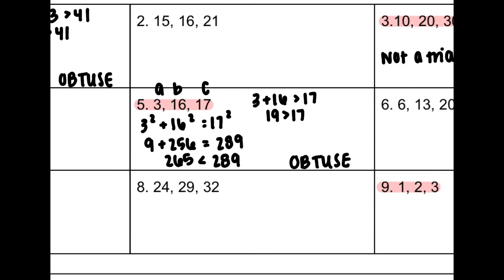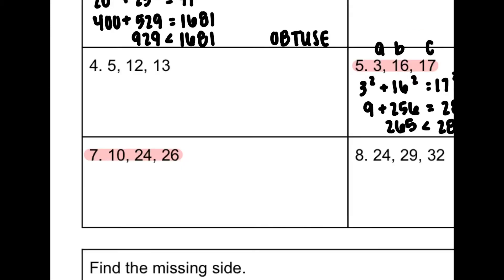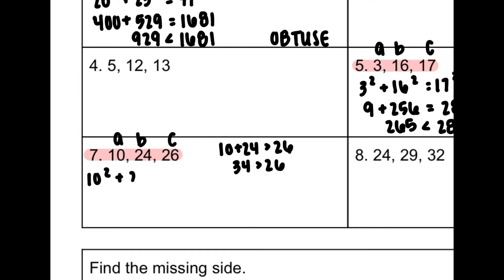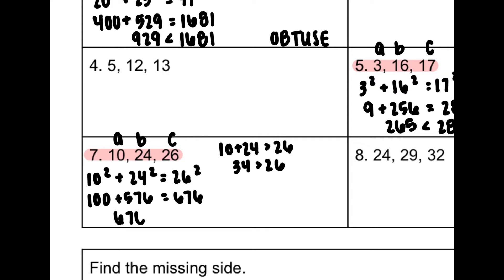If you don't remember how to do this, make sure you took the notes on the Converse of the Pythagorean Theorem. Now number seven: I check again — 10 plus 24 is 34, which is greater than 26, so I can continue. C is 26; A and B are 10 and 24. So 10 squared plus 24 squared equals 26 squared: 100 plus 576 is 676, which equals 676. Since both sides are equal, that means the triangle is a right triangle.